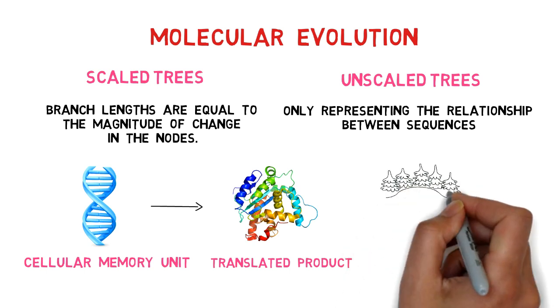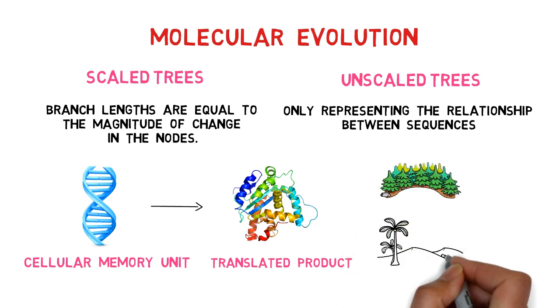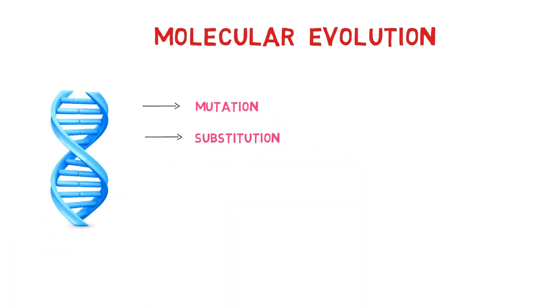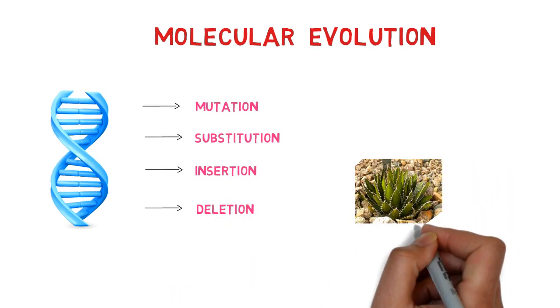Evolution is very important to survive in different types of environments. There are some methods that bring about change or evolution in any organism. DNA gets modified by mutation, substitution, insertion, and deletion.